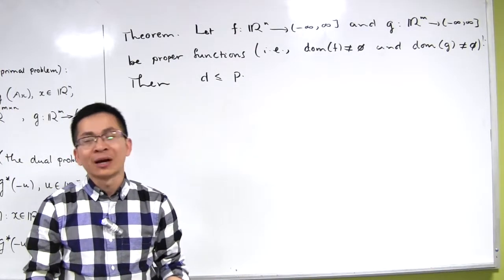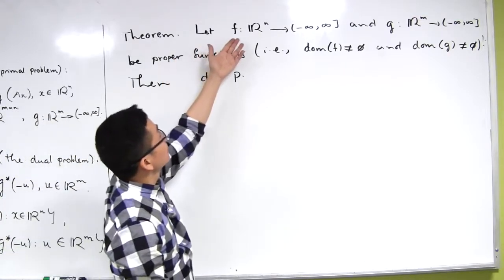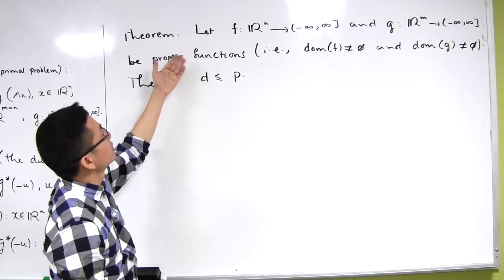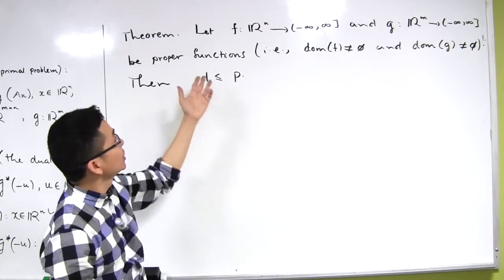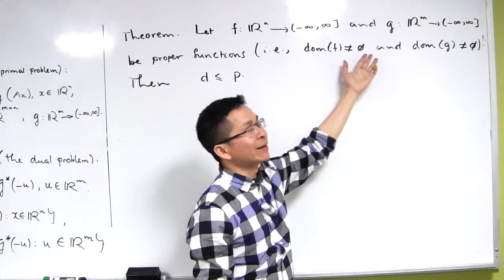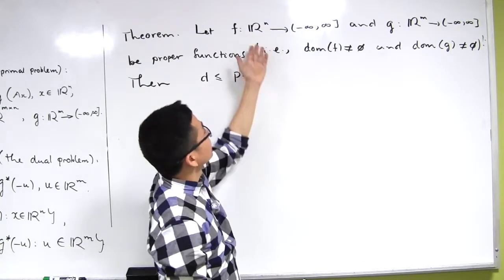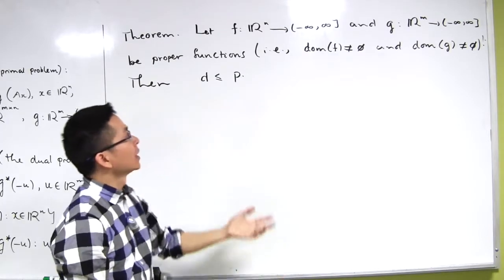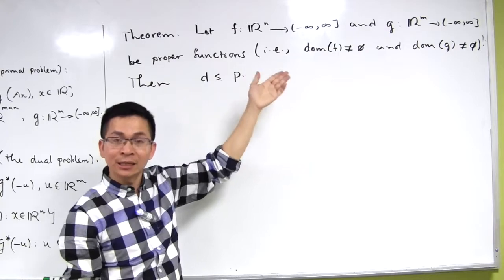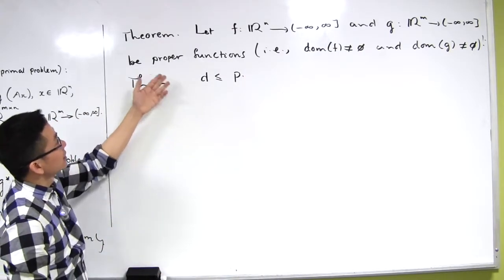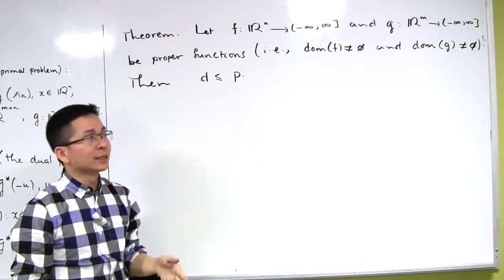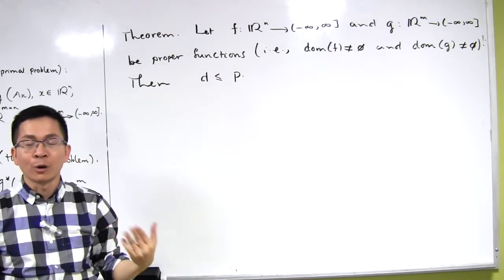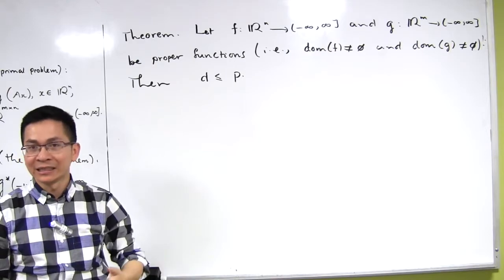Now we are going to talk about weak duality. We consider two functions f and g defined on R^n and R^m as before. We make an additional assumption that f and g are proper functions, meaning that they have non-empty domain. We make this assumption to make sure we can avoid adding infinity with minus infinity. Although some convention can help remove this assumption. So then we always have that d is less than or equal to p — the optimal value of the dual problem is always less than or equal to the optimal value of the primal problem. Let me go ahead and give the details of the proof.